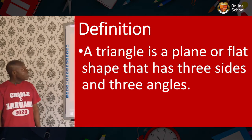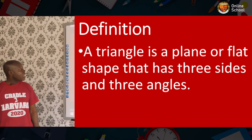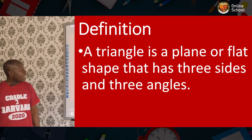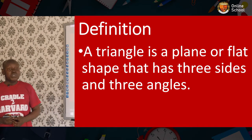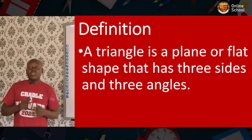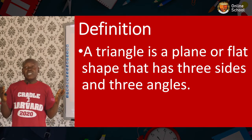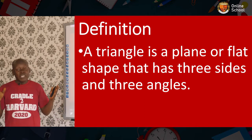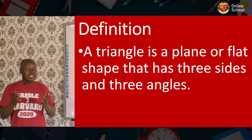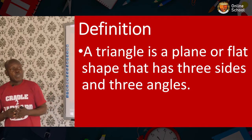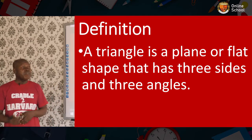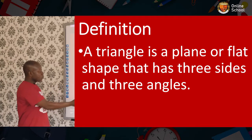A triangle is a plane or flat shape that has three sides and three angles. You can simply say a triangle is a three-sided figure, or a flat figure that is bounded by three lines. A triangle usually has three angles.